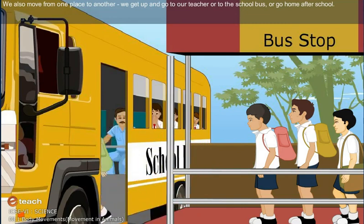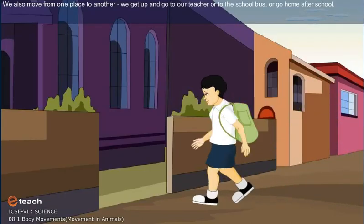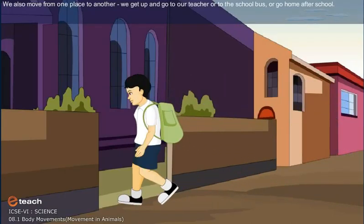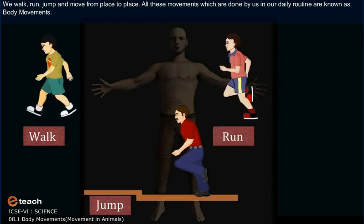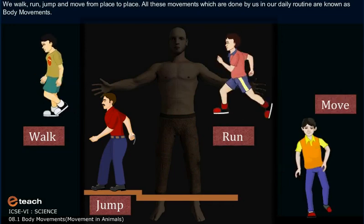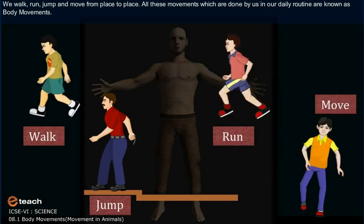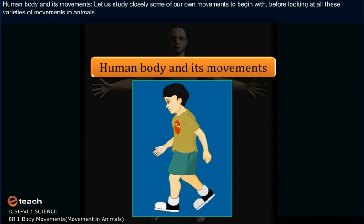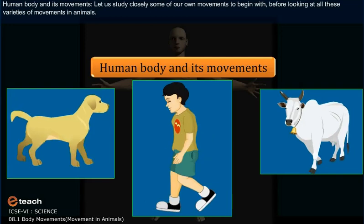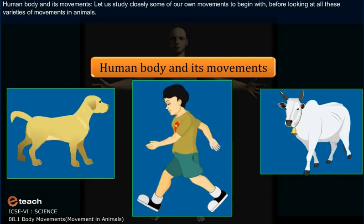We also move from one place to another. We get up and go to our teacher, or to the school bus, or home after school. We walk, run, jump, and move from place to place. All these movements which are done by us in our daily routine are known as body movements. Let us study closely some of our own movements before looking at the varieties of movements in animals.